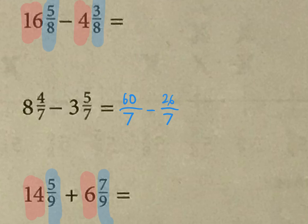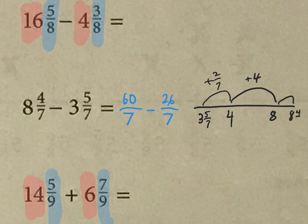The other thing you can do, though, is just try a little number line for subtraction. So if I had 3 and 5/7, how much more would I need to get to 4? I would need 2/7 more. And then if I needed to go to 8, I would do 4 more, right? And then if I needed to get to 8 and 4/7, that's another 4/7. So I can just add those up and get the answer to that one.